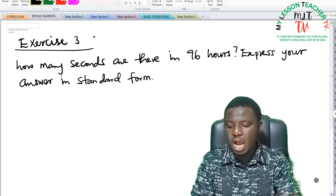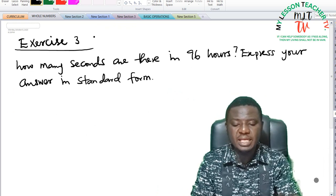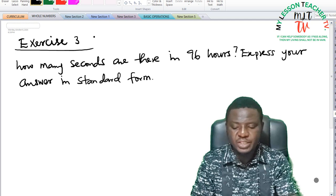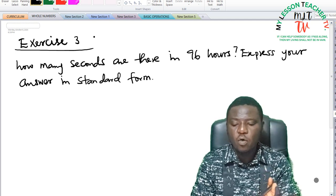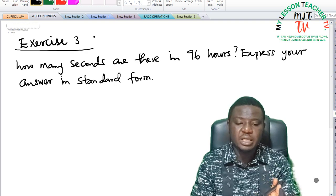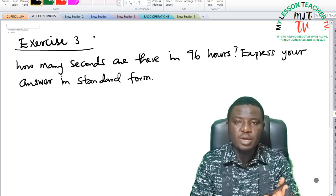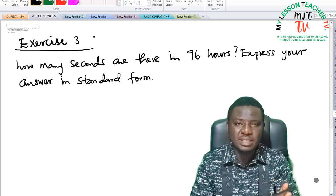Exercise 3 says, how many seconds are there in 96 hours? Express your answer in standard form. What you have to do is first convert 96 hours into seconds. From there, you can then express such numbers in standard form.